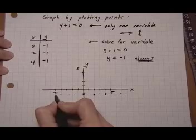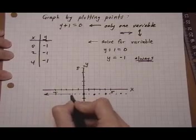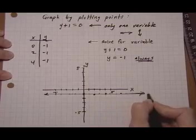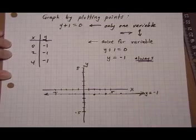So no matter where I am horizontally, you see this fills in, it's making a horizontal line. And that's the line y equals negative 1.